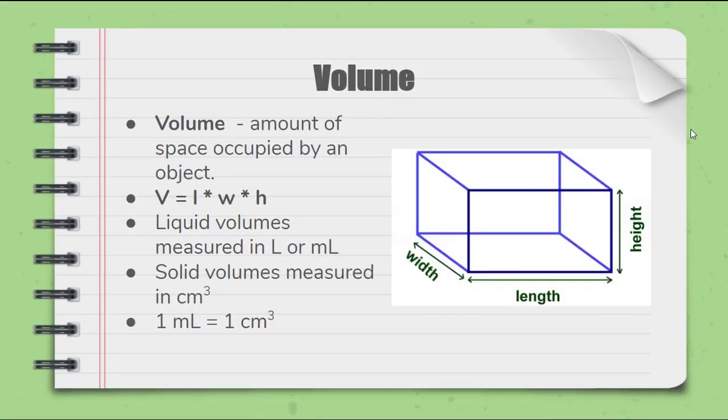Let's have a discussion about a few more things that we want to look at before we end this video. Let's talk about volume. Volume is the amount of space that is occupied by an object. And the formula for that is length times width times height. Liquid volumes are typically measured in liters or milliliters while solid volumes are typically measured in centimeters cubed. One milliliter is equal to one centimeter cubed so there's a nice little conversion factor between the two.